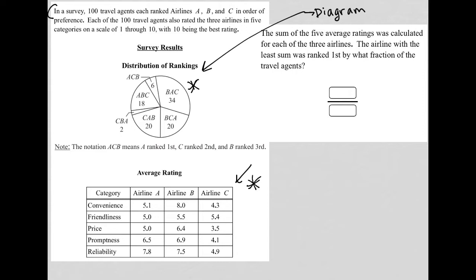So the first pie chart we have here is the survey results. This tells us the order of preference, right? A, then C, then B. Six of the 100 travel agents thought this was the order of preference of the airlines for themselves.